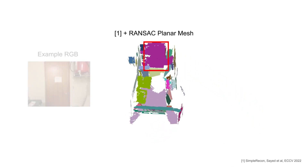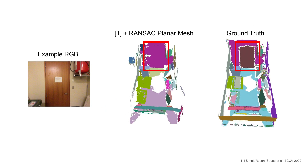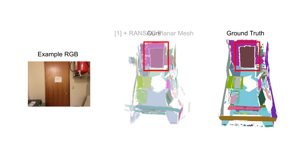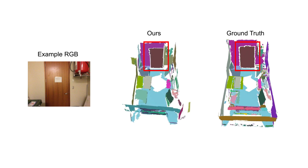However, since RANSAC uses only geometric information, it fails to separate parts of the scene that belong to unique 3D planes despite being semantically distinct — for example, a closed door. In this work, we introduce a new approach for 3D plane estimation which is able to separate the scene into semantically meaningful planes.